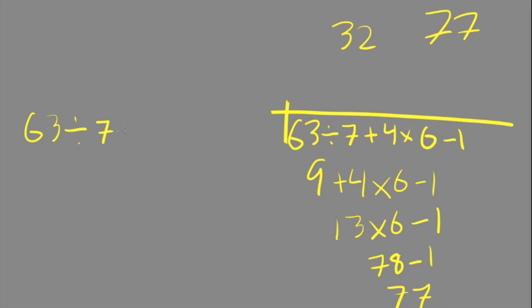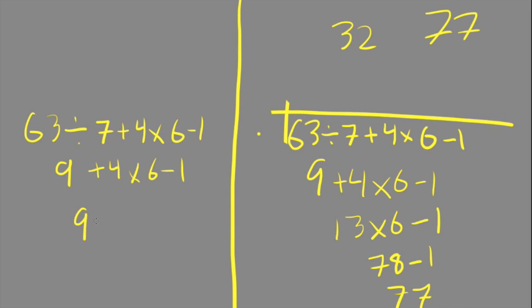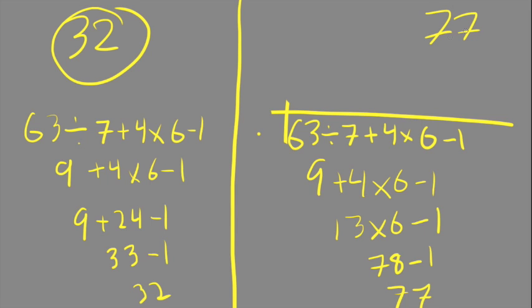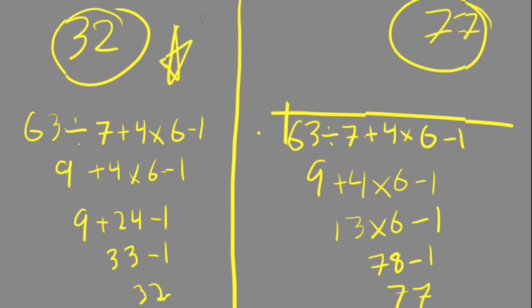63 ÷ 7 is 9 + 4 × 6 - 1. This time we're going to do 4 × 6 because it is multiplication. This is the correct way. 9 + 24 is 33, - 1 gives us 32. 32 is the correct answer, not 77. The mistake they made was adding 9 + 4 instead of doing 4 × 6. Thanks for watching. I hope it was helpful.